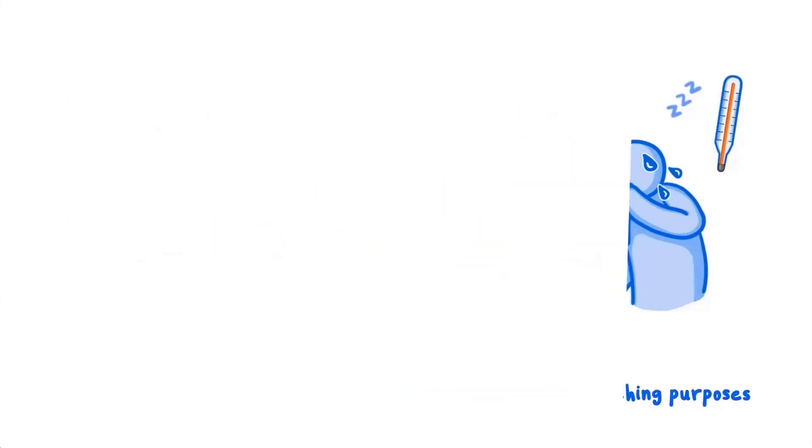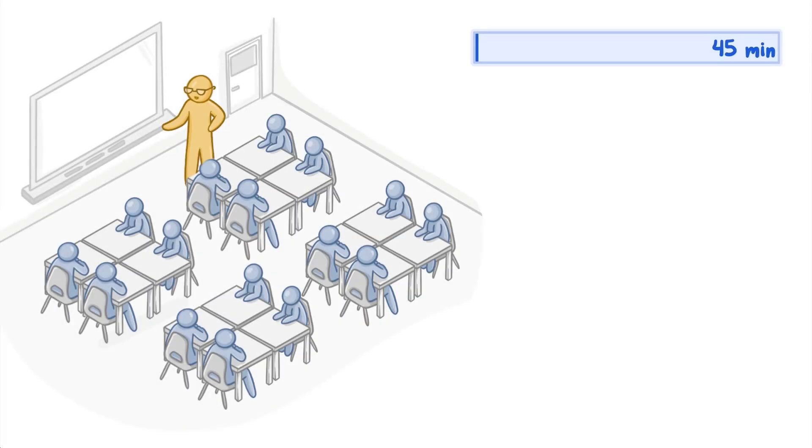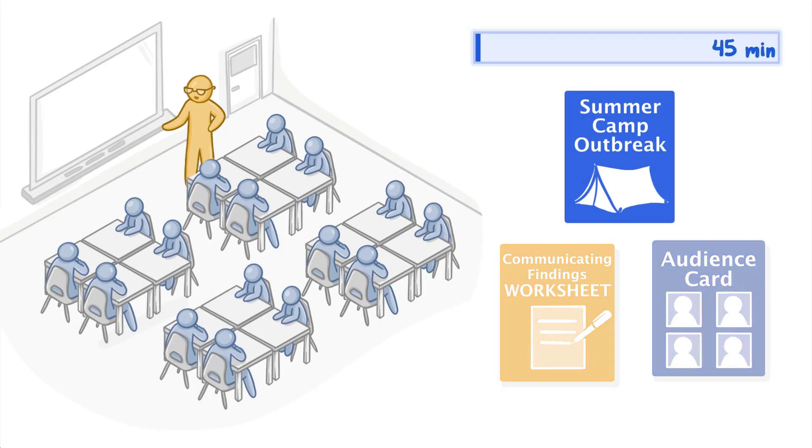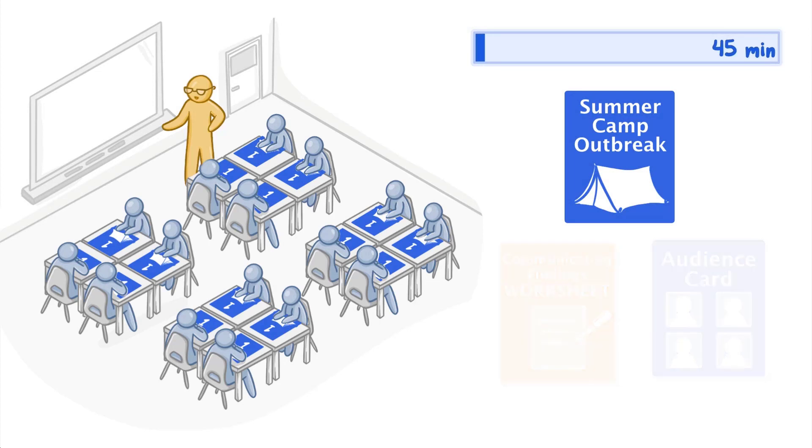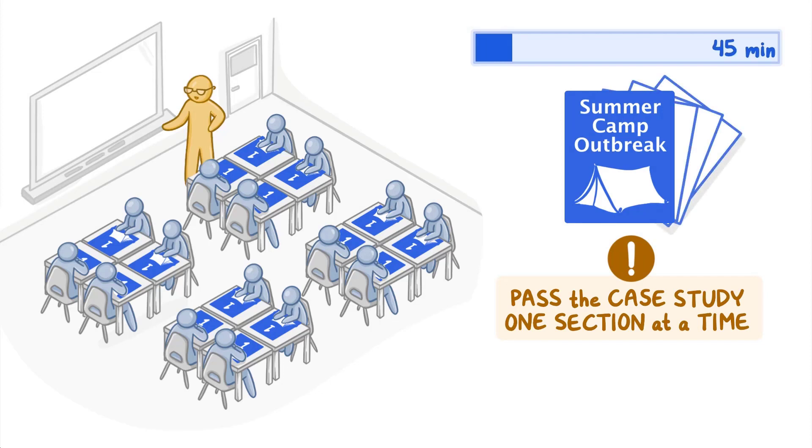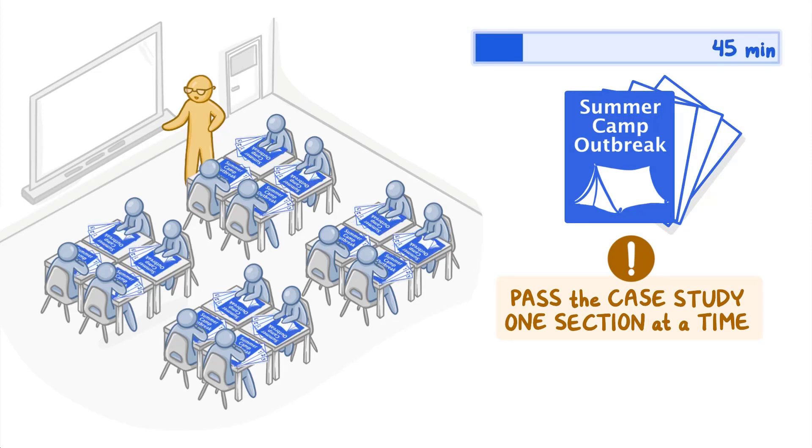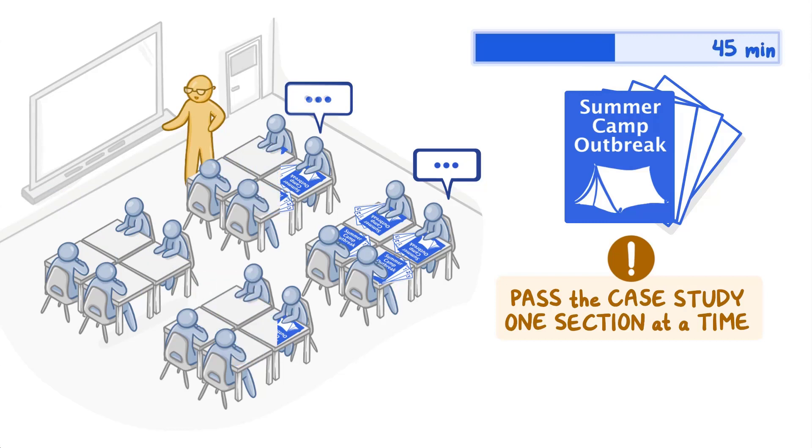Start this collaborative, whole-class activity by handing out a summer camp outbreak case study investigation overview to each student. Pass out the case study one section at a time as prompted by the instructions. As the activity progresses, students will discover new information through each section, the overview and individual parts one through three. Walk through the case study as a class and answer the questions together.